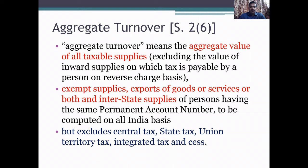What is aggregate turnover? Aggregate turnover, according to Section 2, subsection 6, states that it is the aggregate value of all taxable supplies, which excludes the value of inward supplies on which taxes are payable by a person on reverse charge basis. It includes exempt supplies, export of goods or services or both, and interstate supplies of persons having the same Permanent Account Number, to be computed on an all-India basis. But it excludes Central Tax, State Tax, Union Territory Tax, Integrated Tax, and CESS.